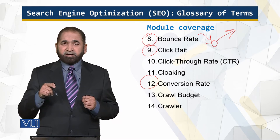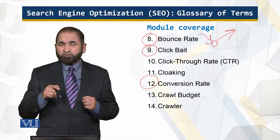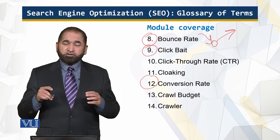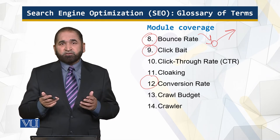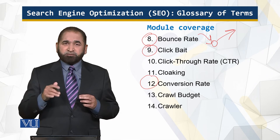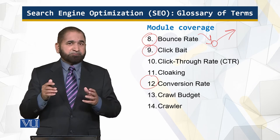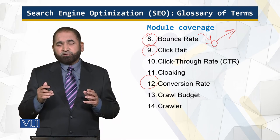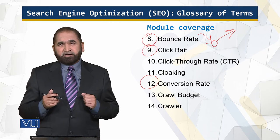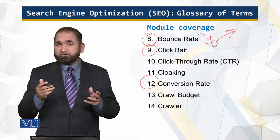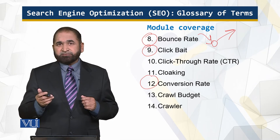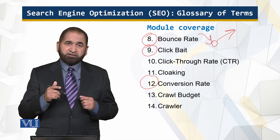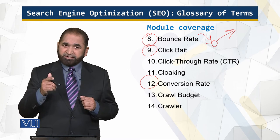Conversion rate is again about people who land on your page — it measures, as a percentage, how many of those people do what was required of them. For example, if you ask them to give information, participate in a survey, or get registered, the conversion rate is how many of them actually complete that action relative to how many visited.